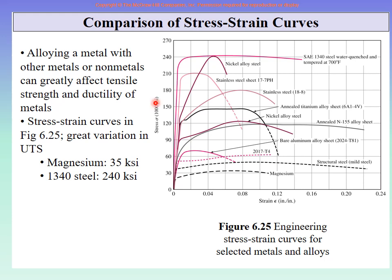Here is a comparative real graph — not a schematic. The vertical axis is stress in kilo-psi and the horizontal axis is strain. It covers a variety of materials: magnesium, structural steel, aluminum alloy, annealed alloy, nickel alloy, titanium alloy, stainless steel, nickel alloy steel, and SAE 1340 steel — a large variety of practical engineering materials. Looking at the vertical axis lets you compare the strength of each material.